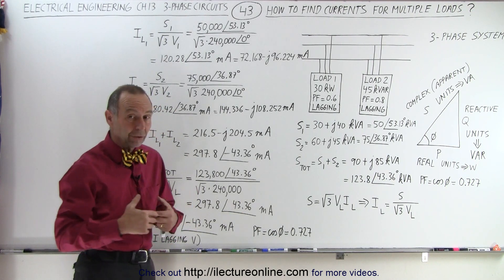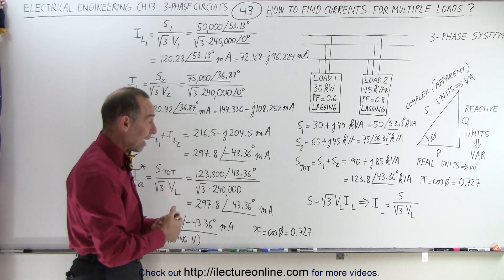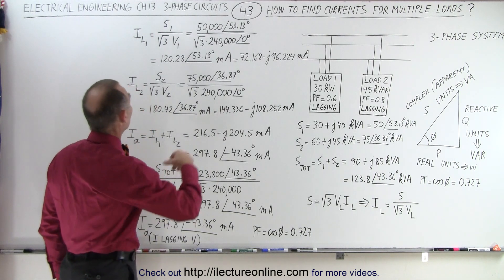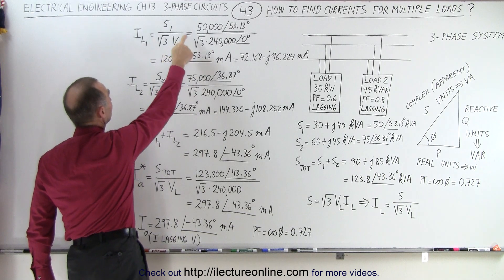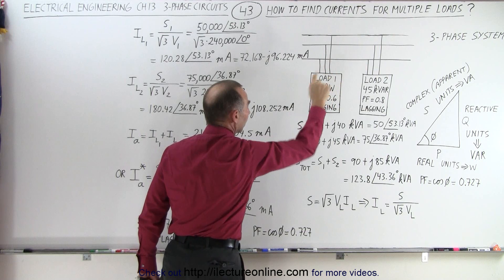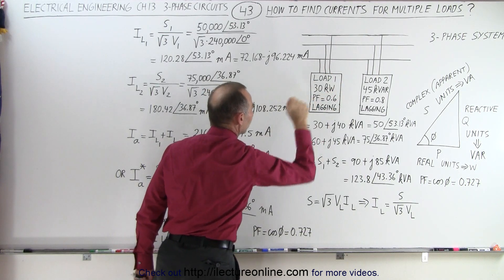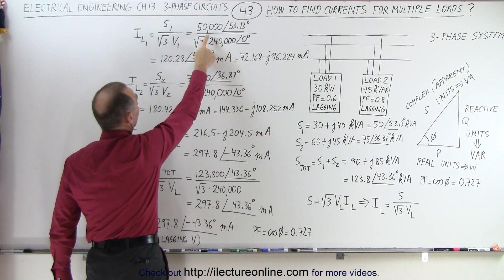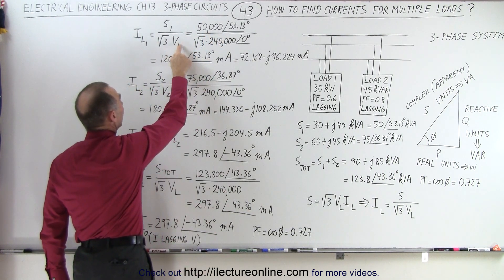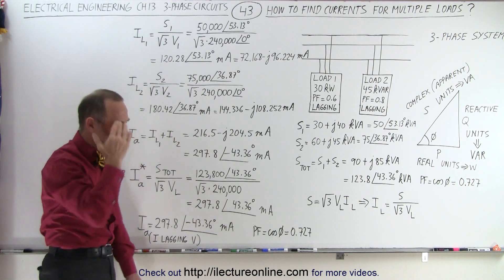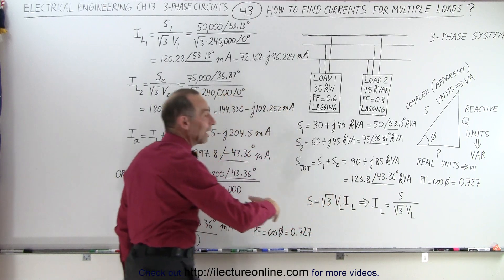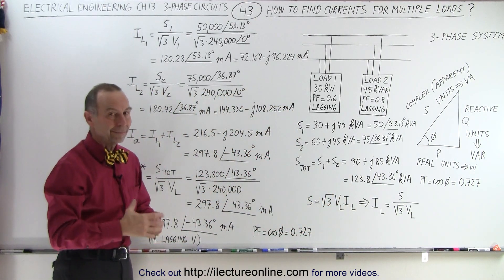In this case, we're going to assume that the line voltage is 240 volts with a zero phase angle, and then we're going to find the current by plugging that into the equation. For the first load, we have the complex power S1 equal to 50,000 VA at a 53-degree phase angle, divided by the square root of three times V1. This equation is the same regardless of whether you have a delta load or a Y load — it makes no difference.